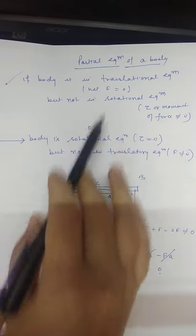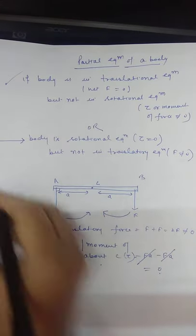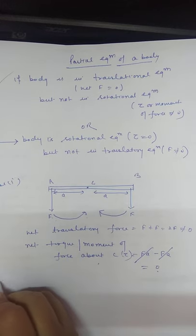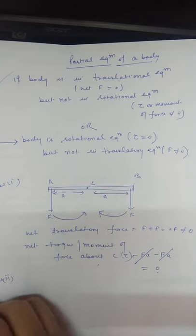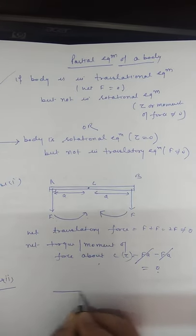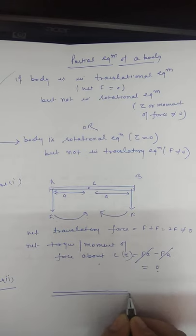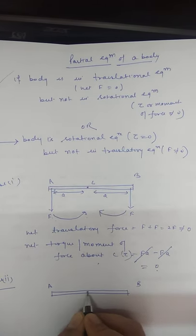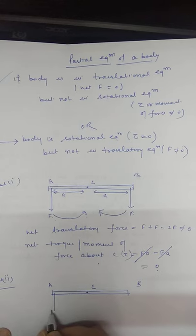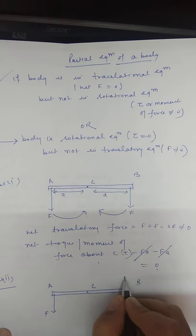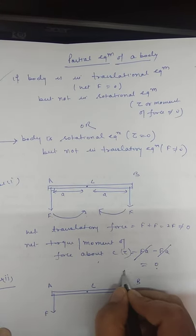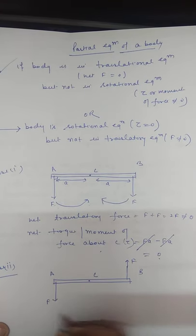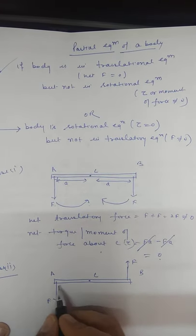Now for Case 2: the body is in translational equilibrium but not in rotational equilibrium. Consider rod AB with central point C. On one side, force F is acting in the downward direction, and at point B the force is acting in the upward direction. What is the net translatory force acting on it?